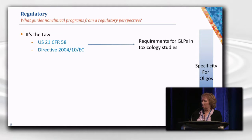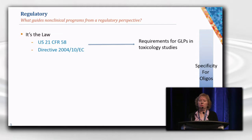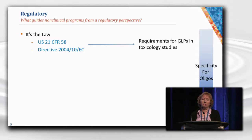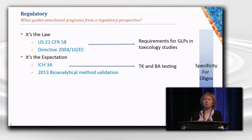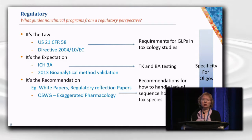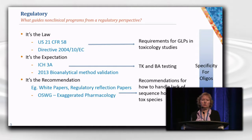So what do we use to guide us from a regulatory perspective? First, we use the law. There are regulatory requirements for use of GLPs, for example, found in the U.S. Code of Federal Regulations and the EU directive. Similarly, there are expectations described in guidance documents — these guide us on how to put together a TK program or what's required for a bioanalytical program. But they're not very specific for oligos. It's really not until we get to recommendations in white papers and regulatory reflection papers where we start to get down to the nitty-gritty of what we need to do for an oligo.